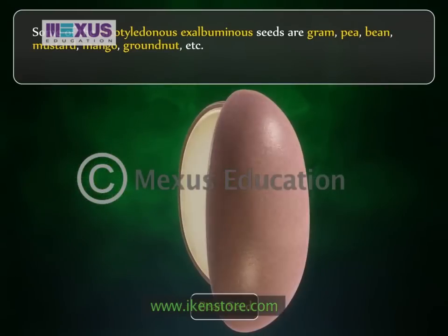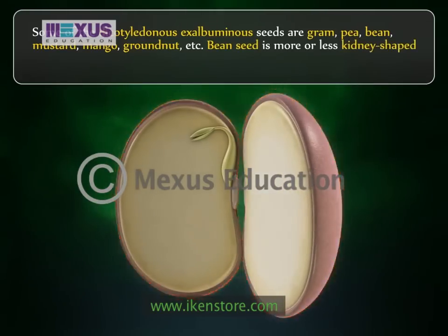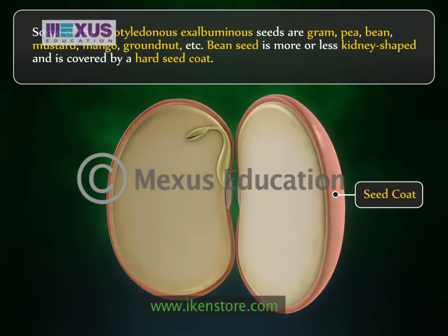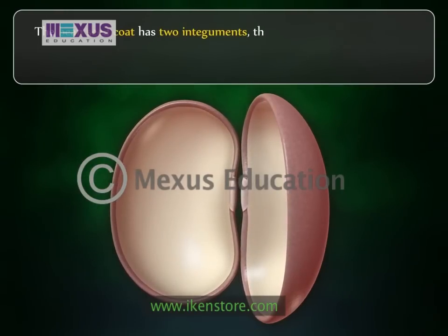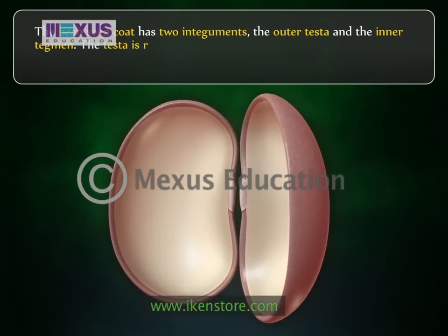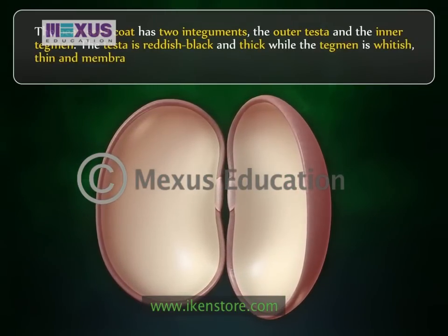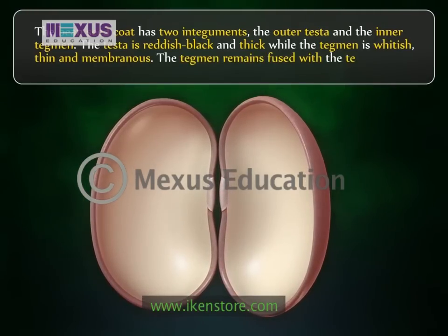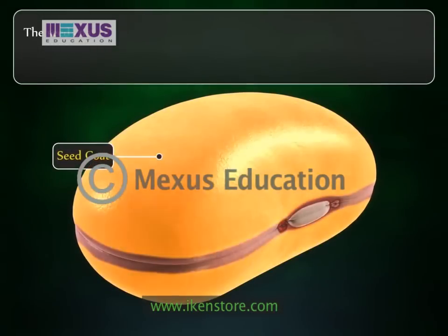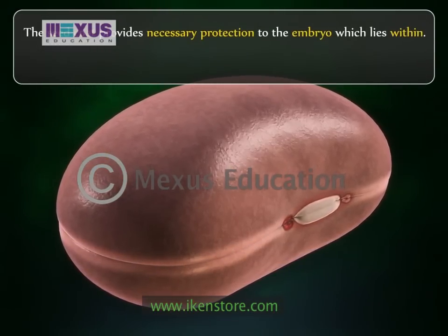Let us take the example of a bean seed. A bean seed is more or less kidney-shaped and is covered by a hard seed coat. The bean seed coat has two integuments: the outer testa and the inner tegmen. The testa is reddish-black and thick, while the tegmen is whitish, thin, and membranous. The tegmen remains fused with the testa. The seed coat provides necessary protection to the embryo which lies within.